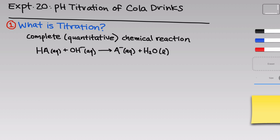For example, the weak acid HA can react with the strong base hydroxide in water to form the conjugate base A⁻ and H₂O. Because hydroxide is a strong base, this reaction is complete — that's why we only use a forward arrow. The reactants in a titration reaction are given special names: one is called the analyte and the other is called the titrant. I'll use red for the analyte throughout this video and blue for the titrant.